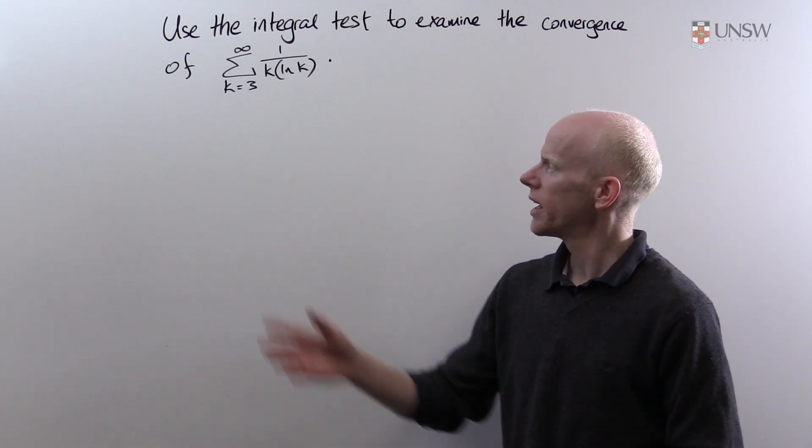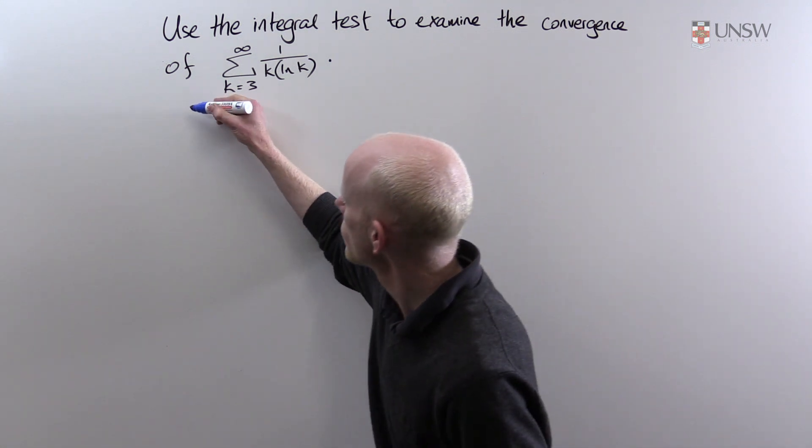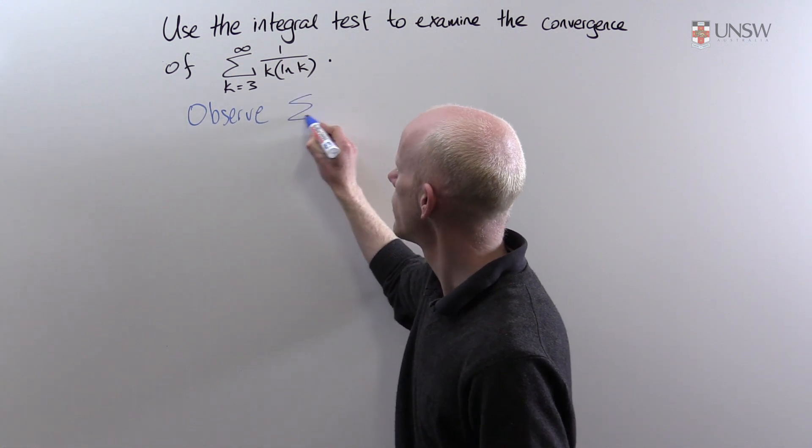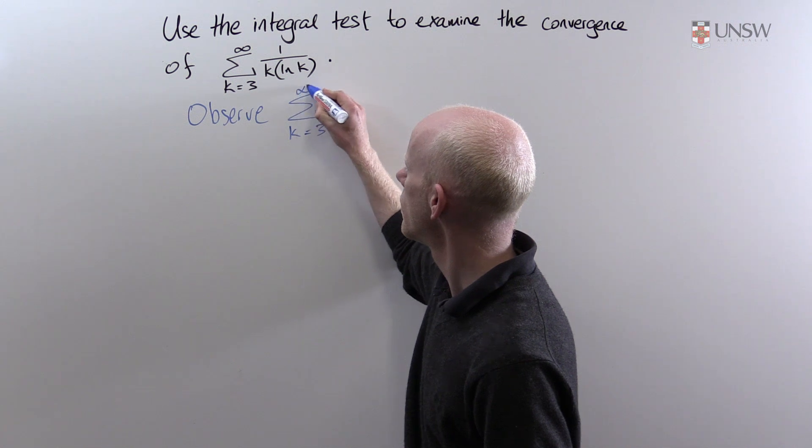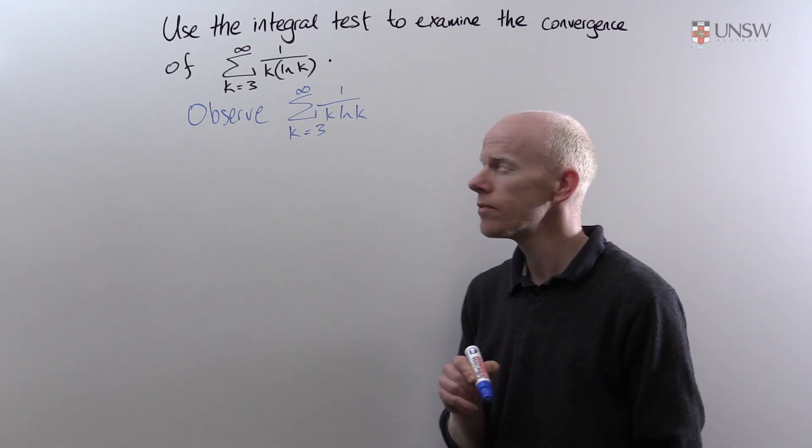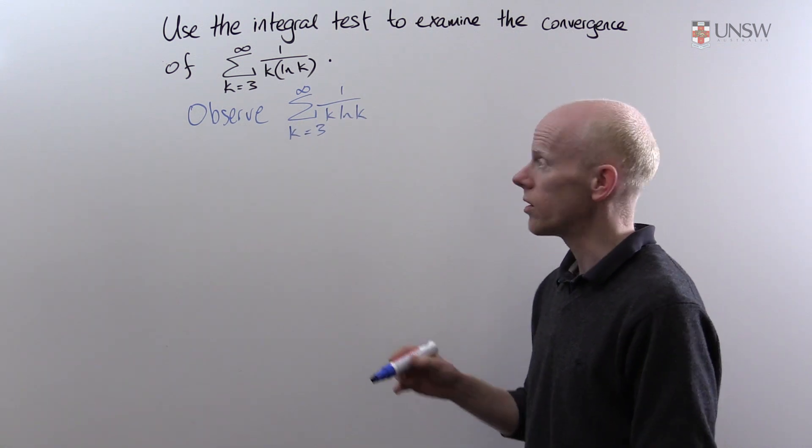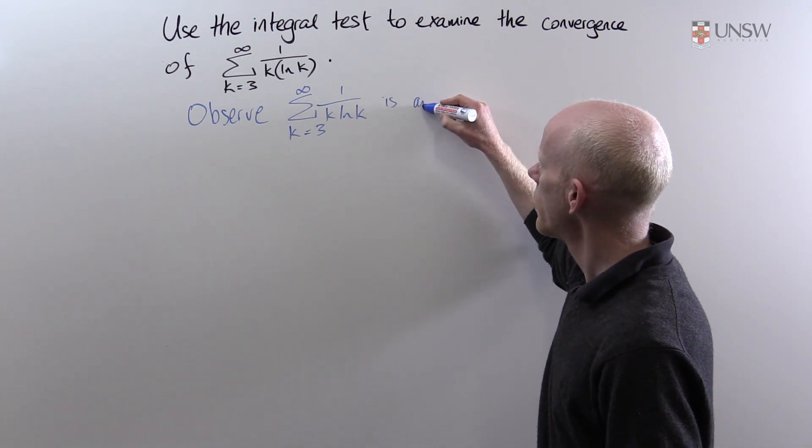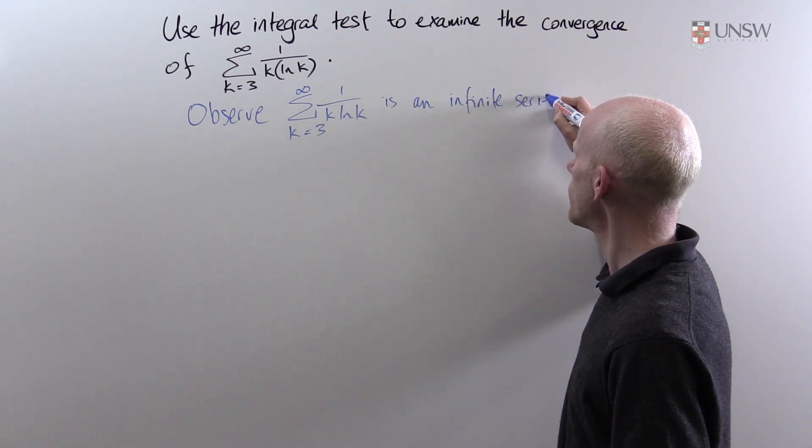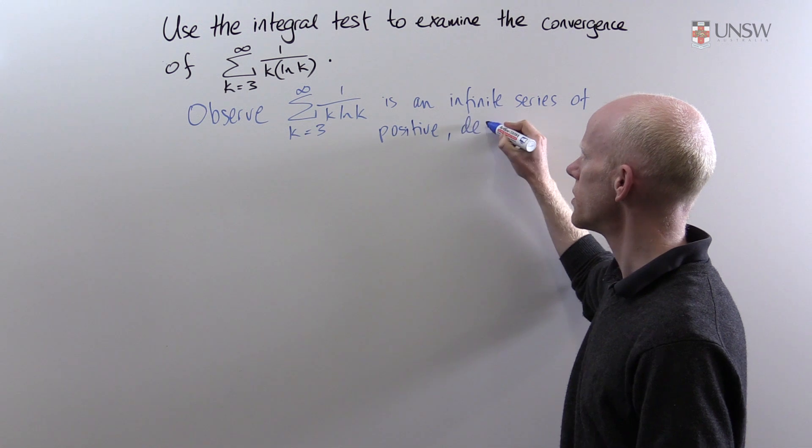First of all we have to just think about the series in question. The first thing we want to observe is that the series from k equals 3 to infinity of 1 over k log k is an infinite series of positive decreasing terms.